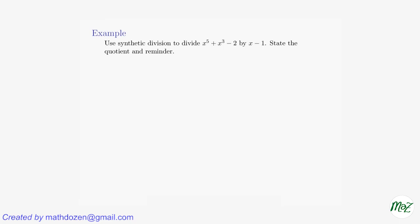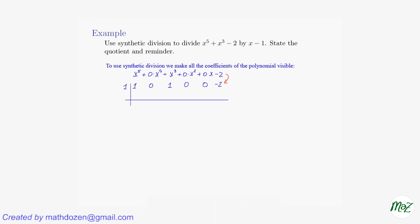Let's do one more example. We have the problem of dividing x to the fifth plus x cubed minus 2 by x minus 1. To set up the synthetic division correctly, we make all the invisible coefficients visible. So it's x to the fifth plus 0 times x to the fourth plus x cubed plus 0 times x squared plus 0 times x minus 2. We strip away all the x variables and put the coefficients: 1, 0, 1, 0, 0, negative 2. And then we move this 1 — that is subtracted from x — over here. And that's the setup.